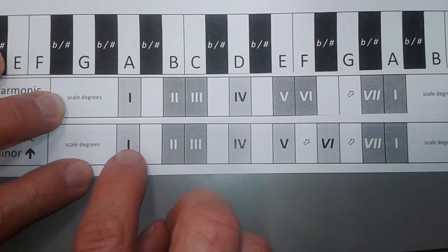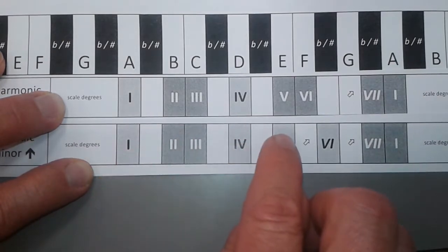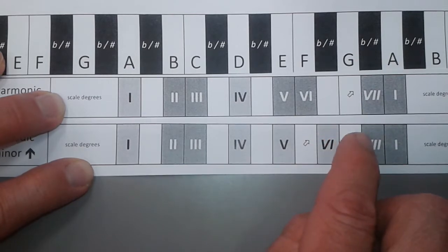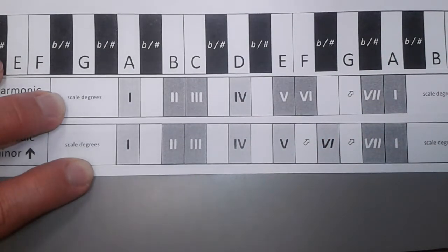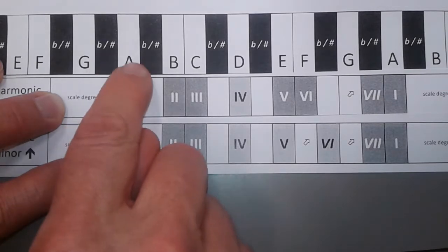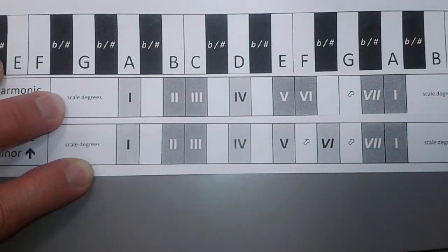So better for melodies is A, B, C, D, E, F sharp, G sharp, A, which, incidentally, is exactly the same as the major scale of A major, except for the third note, which, of course, is the minor third.